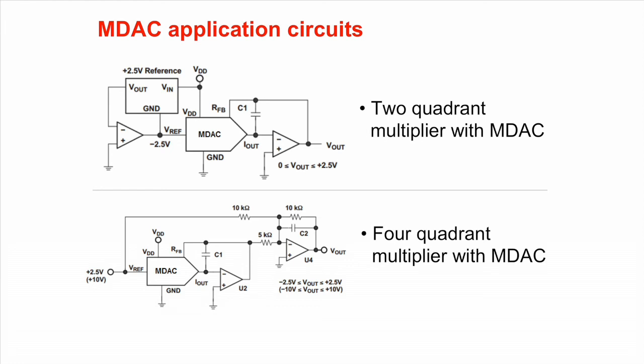One of the most common ways to use MDACs is to create a two and a four quadrant multiplier circuits as shown. For more information on the products mentioned or to ask questions on our Precision Data Converter Forum, please visit the following URLs.